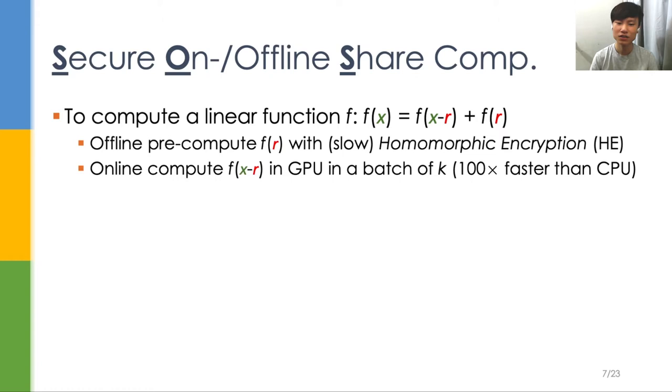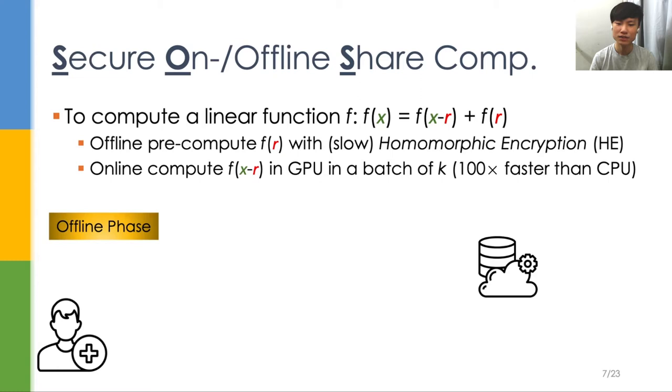In the online phase, we compute f(x-r) in GPU, which is much faster than CPU in batch processing. To be more specific, in the offline phase, the client first randomly draws rc and sends it after performing additive HE.